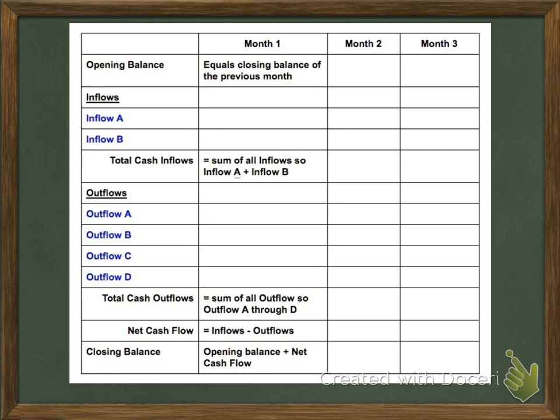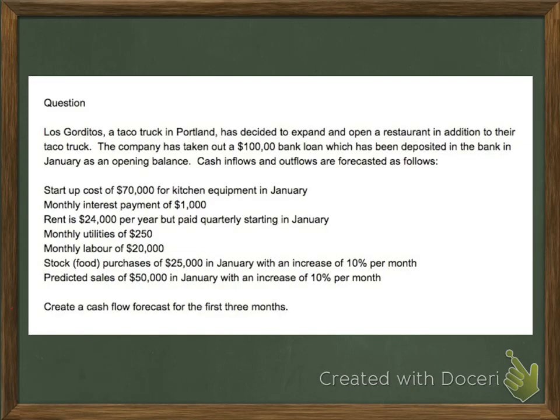Now that we understand the template, let's look at a question. The first thing you need to do is annotate and note any important information. So I'll highlight a couple things: $100,000 bank loan — yes, it's $100,000, not $10,000 — and it will be our opening balance, so it's all deposited. Next, I need to look at our inflows and outflows and tell myself what they are.